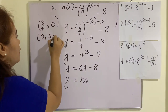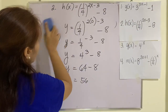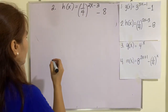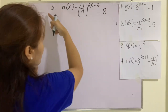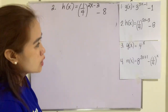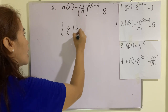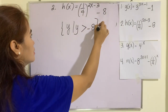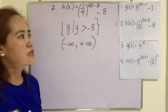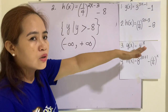So the y-intercept is (0, 56). For the horizontal asymptote: there is no vertical asymptote. Since the base is 1/4, this is a decreasing function, and the horizontal asymptote is y equals negative 8. The range is all y such that y is greater than negative 8, or in interval notation: (negative 8, positive infinity).